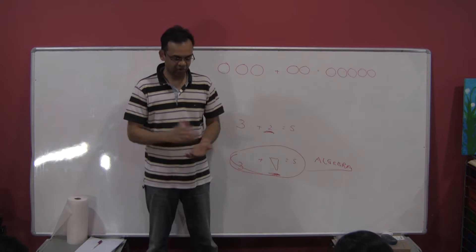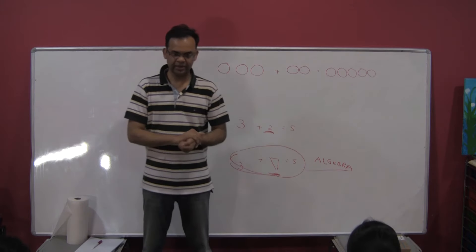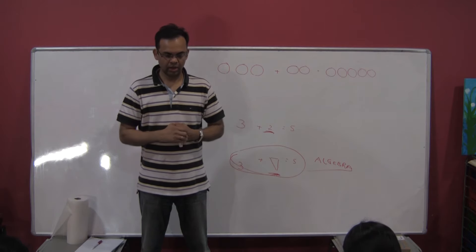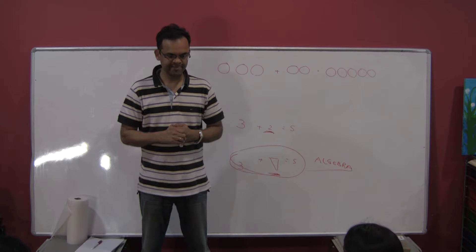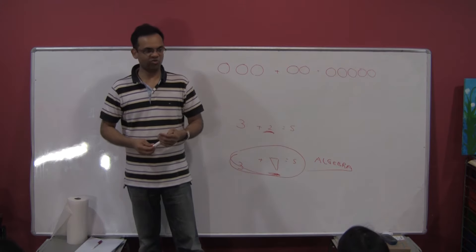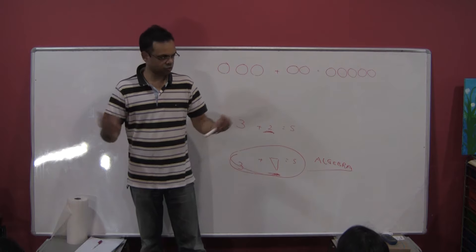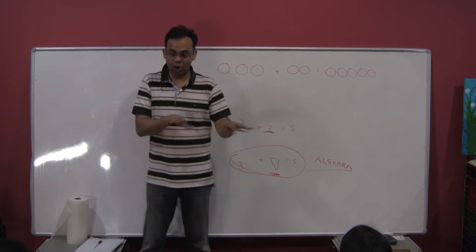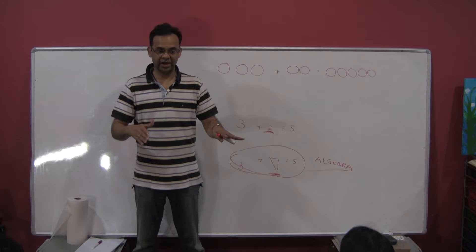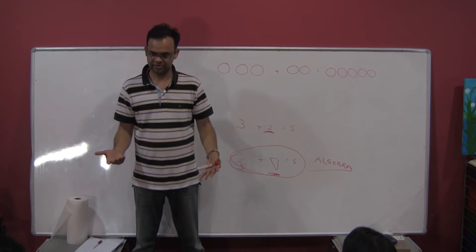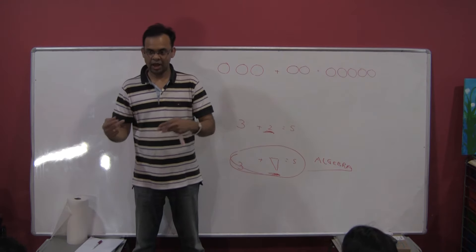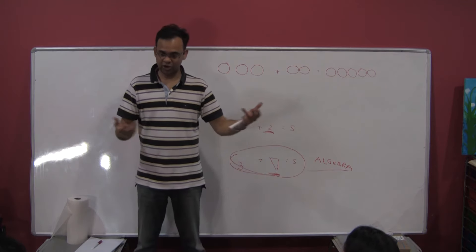Let me give you an example of algebraic thinking. In a farm there are some animals — pigs and chickens. Together there are 45 pigs and chickens. We don't know how many are pigs, how many are chickens. But we do know that there are a total of 118 legs. Remember, pigs have four legs, chickens have two legs each. The question is: how many pigs are there, how many chickens are there? How would you approach solving that problem?